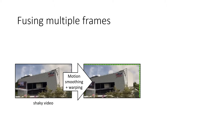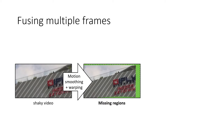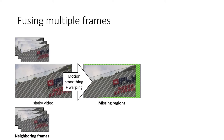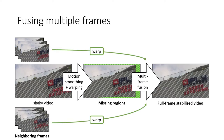Given a shaky input video, a motion smoothing method smooths and warps the frames to stabilize the camera trajectory but results in missing regions around frame boundaries. To synthesize a full-frame stabilized video, we need to align and fuse the contents from multiple neighboring frames in the shaky input video.